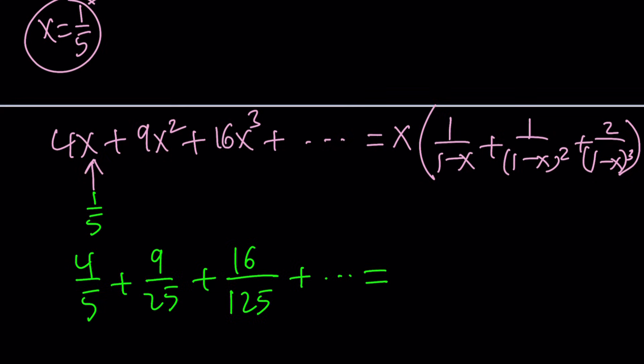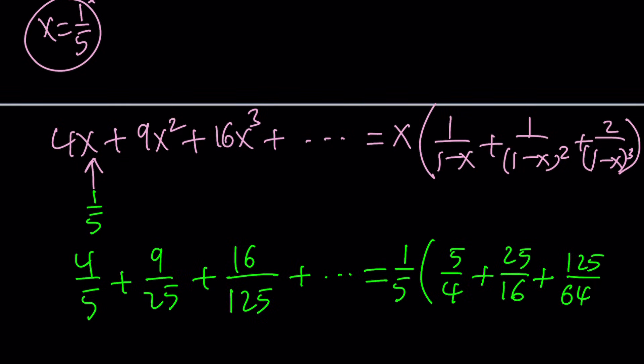And on the right-hand side, we can go ahead and replace x with 1 over 5. So that's going to give us 1 over 5. And then 1 minus 1 over 5 is going to be 4 over 5, but you can write it as 5 over 4. And this will be 1 minus 1 over 5 squared, which is 4 over 5 squared, which is 16 over 25. But you can write it as 25 over 16. So the common denominator will change, obviously. And then plus, we have the 1 minus 1 over 5, which is 4 over 5 cubed. And that would be, when flipped, 125 over 64. Get the idea?